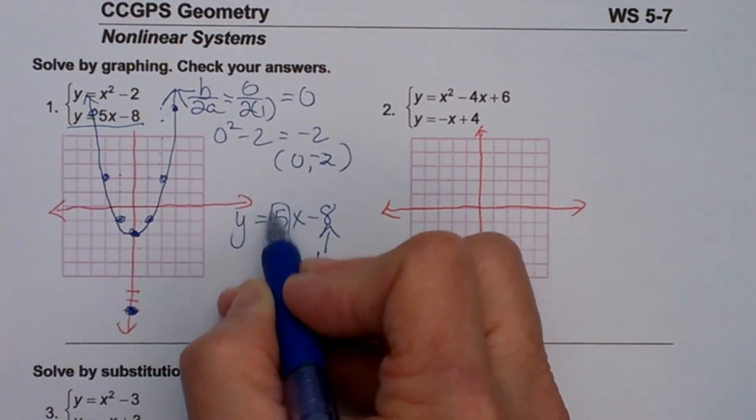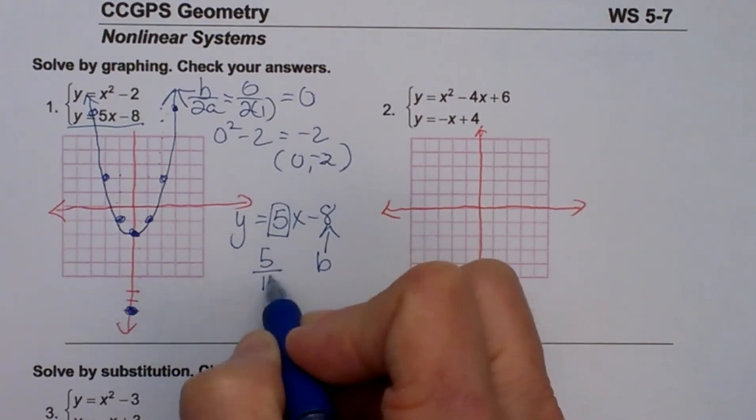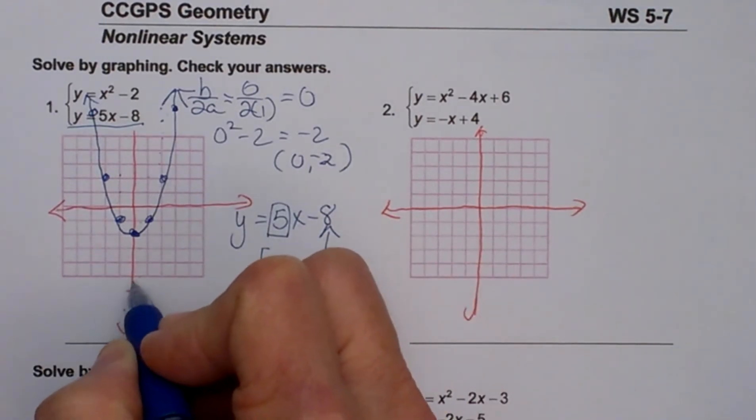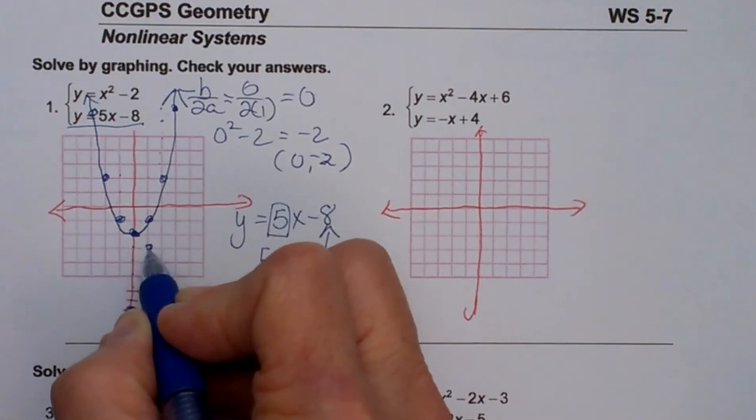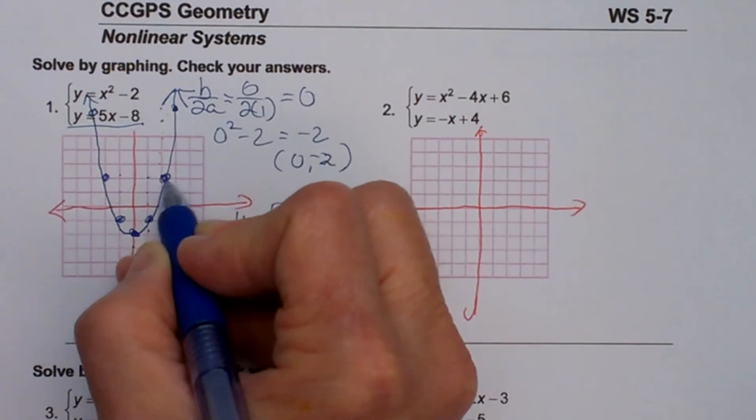So I am going to go down here and plot negative 8 on the y axis, and then my slope is 5, and I always count my rise over my run, so I am going to go up 5 and over 1. 1, 2, 3, 4, 5, and over 1. Do that again. 1, 2, 3, 4, 5, over 1.